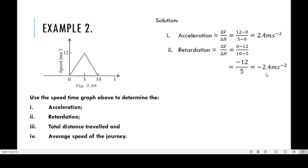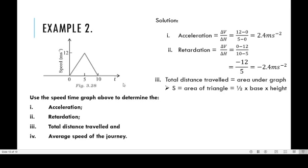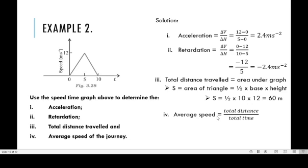The shape under this graph is a triangle. To calculate total distance, find the area of the triangle: half times base times height. The base is 10 and the height is 12. So half times 10 times 12 equals 60 meters. Average speed equals total distance over total time: 60 over 10 equals 6 meters per second.